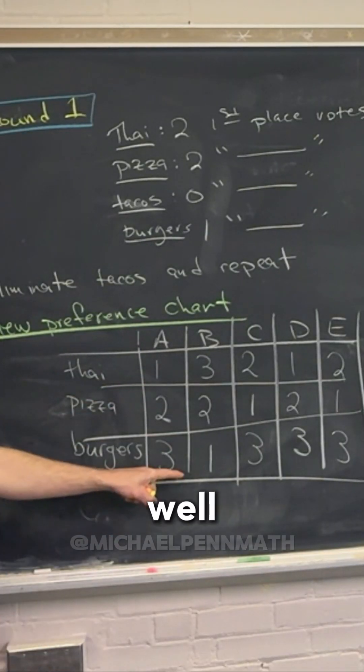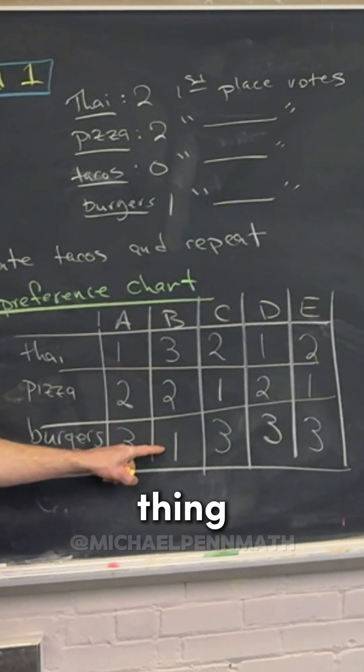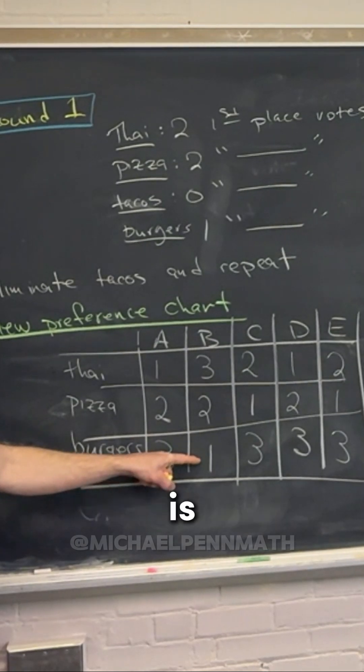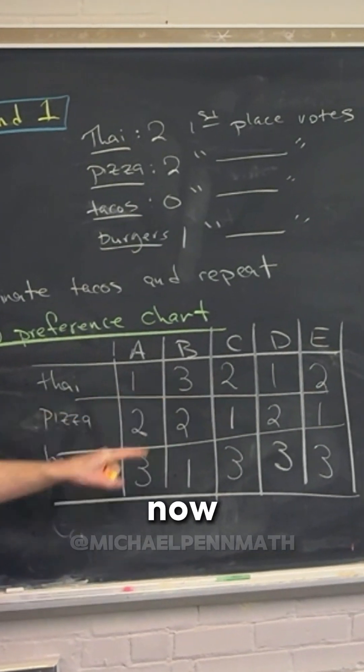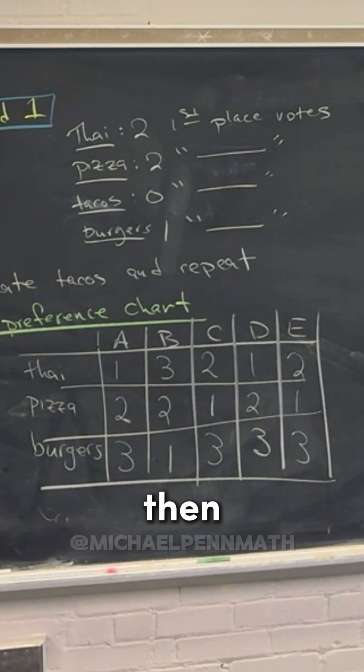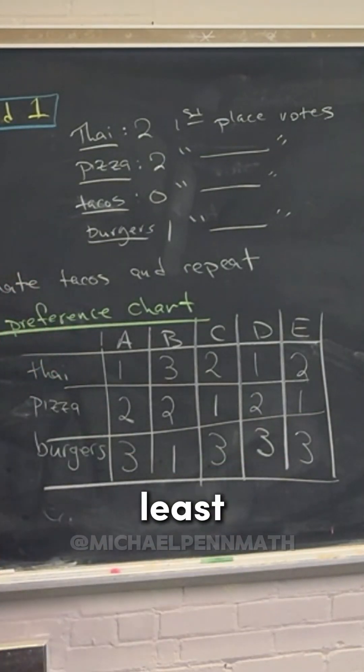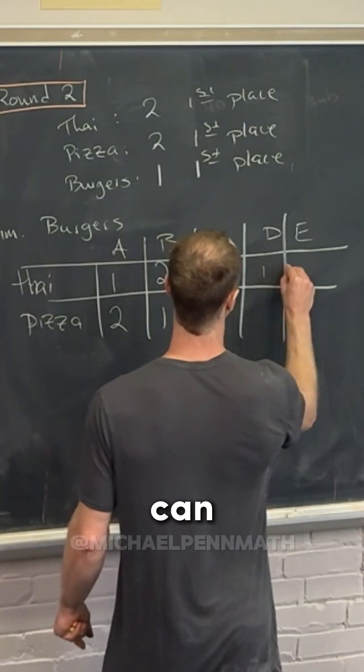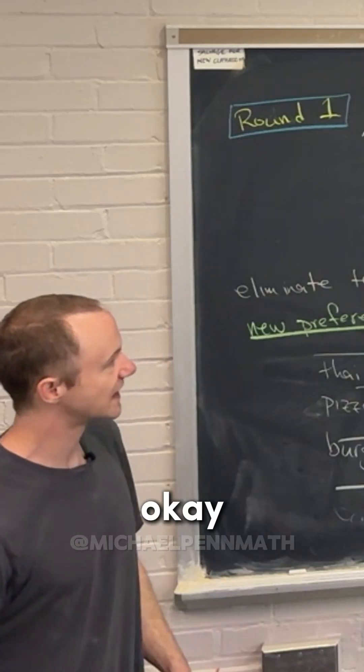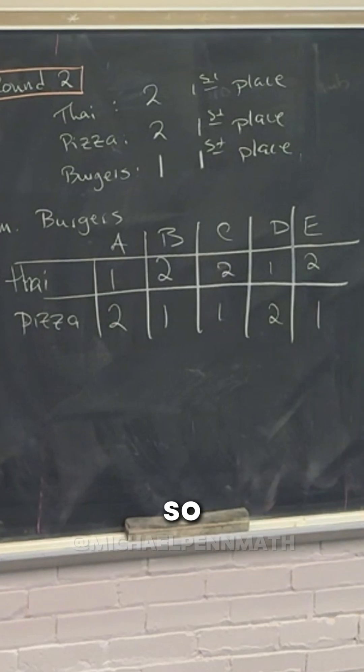And then what about for person B? Well, we eliminated their most preferred thing, right? So that means everything is going to rise up. So pizza is their first and now Thai is their second. And then what about person C? Every other person, we're eliminating their least favorite, right? So this means that we can just quickly copy that over. Okay, so who wins? Pizza. Yeah, so pizza wins.